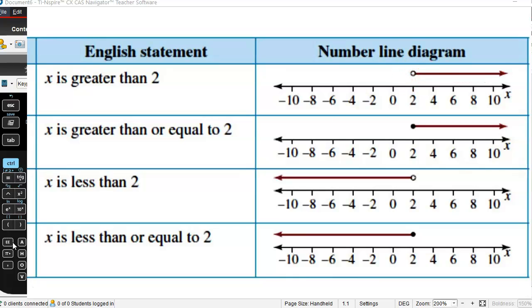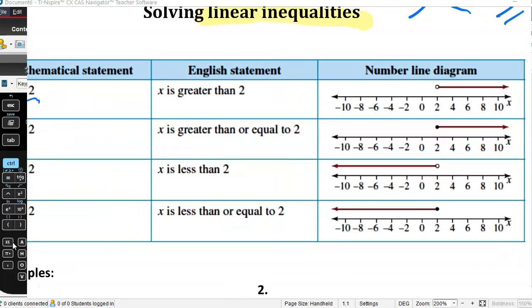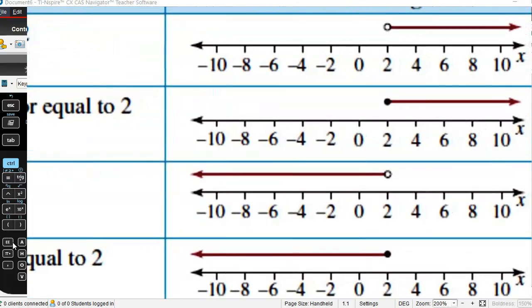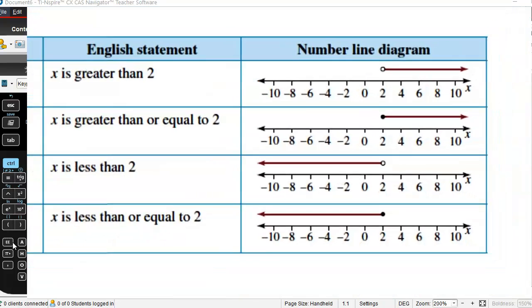It's everything greater than 2. So it might be 2.01, but it can't actually be 2. To contrast, x is greater than or equal to 2 has a closed circle on the diagram. That closed circle shows we include the 2 in our line. So it can be 2 or everything greater than 2.